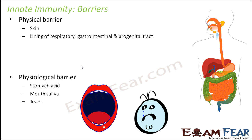The physical barrier physically stops the entry of foreign materials. Skin is the primary physical barrier — it is present in our body by birth and stops entry of many substances. The lining of the respiratory, gastrointestinal, and urogenital tracts also acts as a barrier. For example, the small hair-like structures inside our nostrils prevent the entry of dust or dirt particles into the nasal passage.